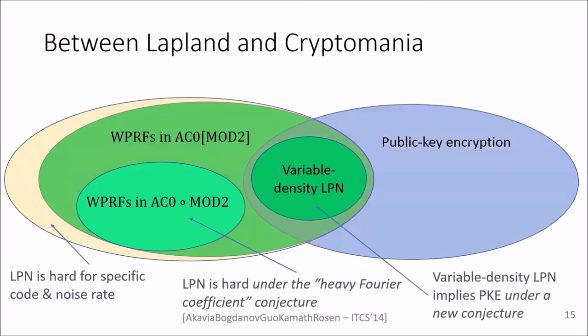Further, we show that weak PRFs that fall into the variable density learning parity with noise framework, which includes our candidate weak PRF computed by sparse F2 polynomials, imply public key encryption under an additional conjecture.